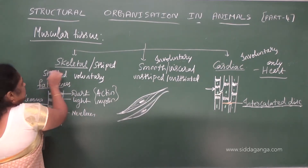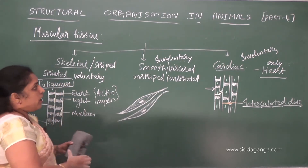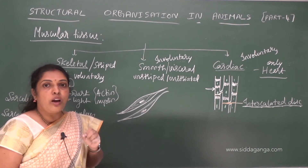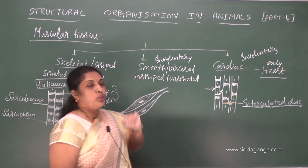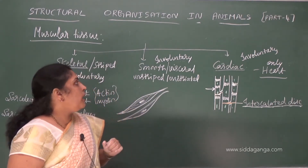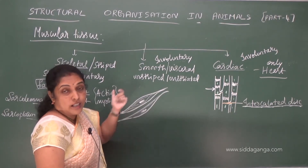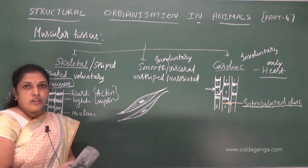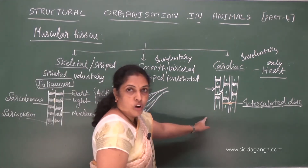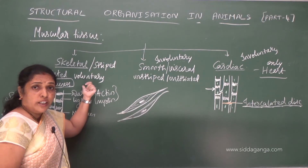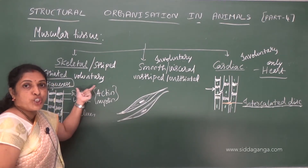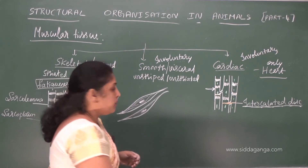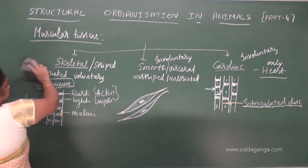Only skeletal muscle shows fatigue, whereas smooth muscle and cardiac muscle do not show fatigue. For exams, you may be asked to compare the three muscle types. Smooth muscle and cardiac muscle are involuntary muscles. Skeletal muscle is the only voluntary muscle and mainly helps in locomotion by attaching to bones.